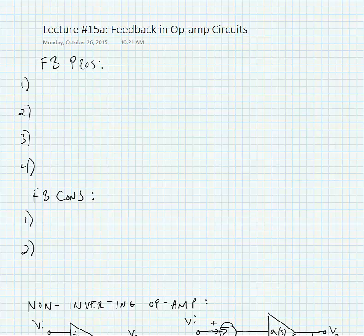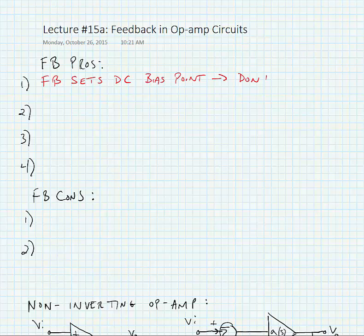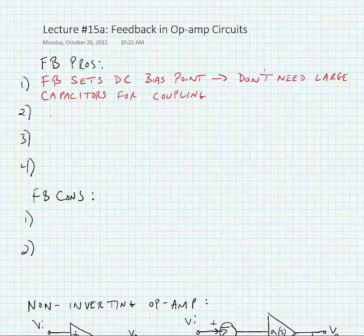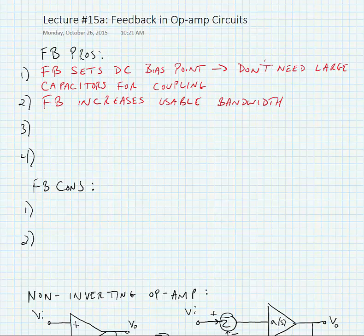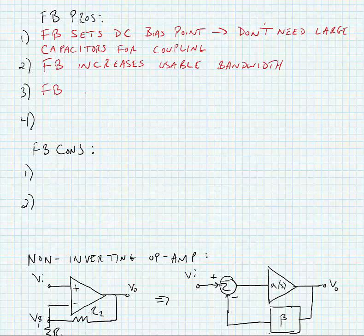We're going to look first at pros and cons of feedback. The first pro is that feedback sets our DC bias point, and this obviates the need for large capacitors for coupling. The second thing we've already seen is that feedback increases usable bandwidth, and it does so by a multiplication by the feedback factor. Feedback also increases the linear output range.